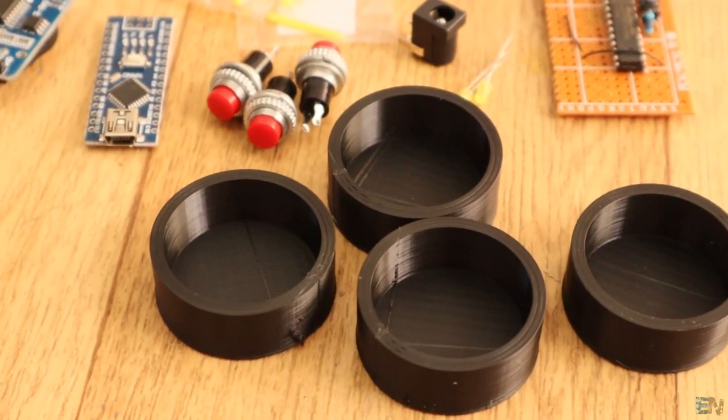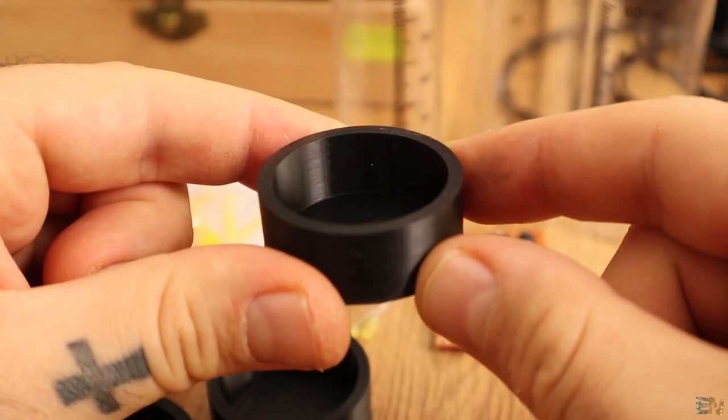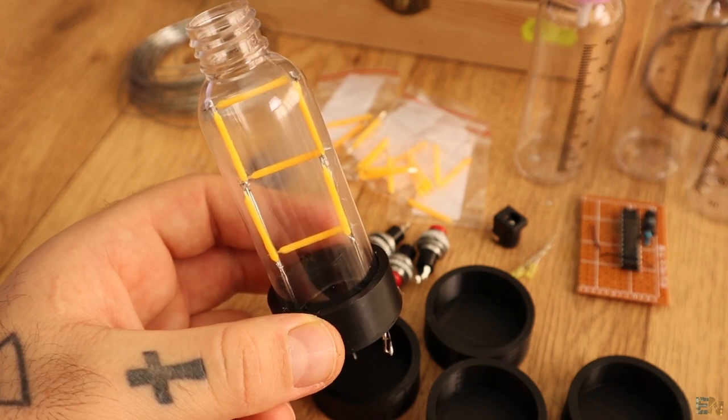I've also printed these plastic bases for the tubes. You could download the STL files for this project from below. Ok, so let's start making the tubes.